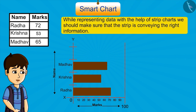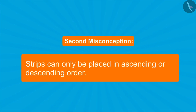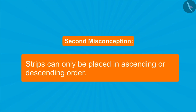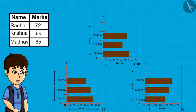So kids, while representing data with the help of strip charts, we should make sure that the strip is conveying the right information. Sometimes we also have the confusion of whether we can place strips only in ascending or descending order. But kids, we can place strips in any order — we only need to keep in mind that each strip represents the right value.